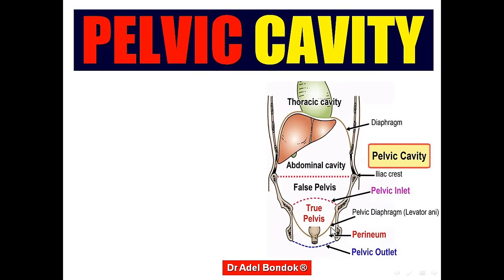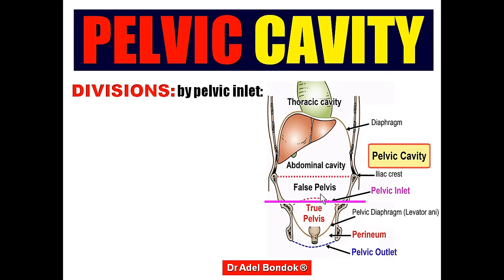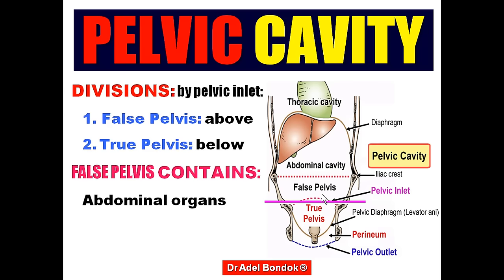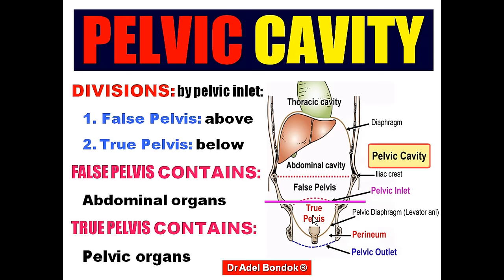The pelvic cavity is divided by the pelvic inlet into an upper part called the false pelvis, and a lower part called the true pelvis. The false pelvis is actually part of the abdominal cavity and contains abdominal organs. The true pelvis, located between the pelvic inlet and pelvic outlet, contains the pelvic organs.